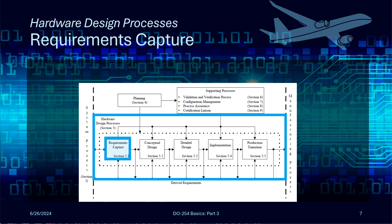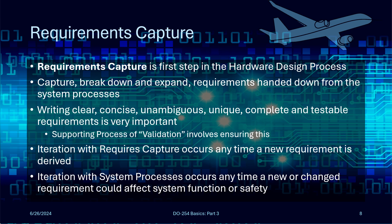Looking back at Figure 5-1, we can see that planning drives two main aspects of DO254 compliance: the supporting processes and the hardware design processes. The first phase of the hardware design processes is requirements capture. Requirements come from the system processes and are handed down into the DO254 project, where the team captures them, breaks them down, and refines them for use in the hardware context. Writing good requirements is key to DO254 success — they need to be clear, concise, unambiguous, unique, complete, and testable.